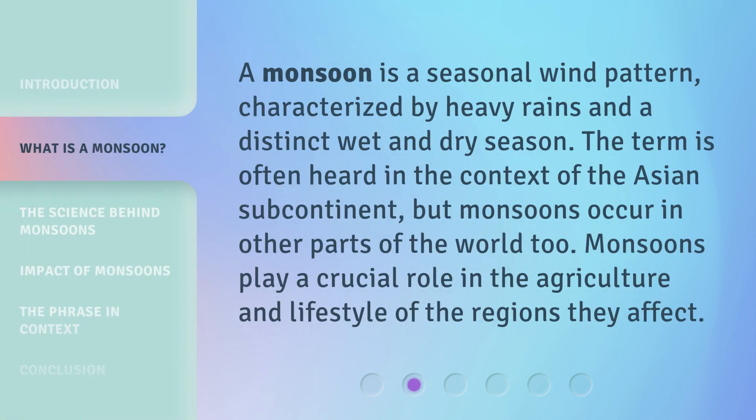A monsoon is a seasonal wind pattern, characterized by heavy rains and a distinct wet and dry season. The term is often heard in the context of the Asian subcontinent, but monsoons occur in other parts of the world, too. Monsoons play a crucial role in the agriculture and lifestyle of the regions they affect.